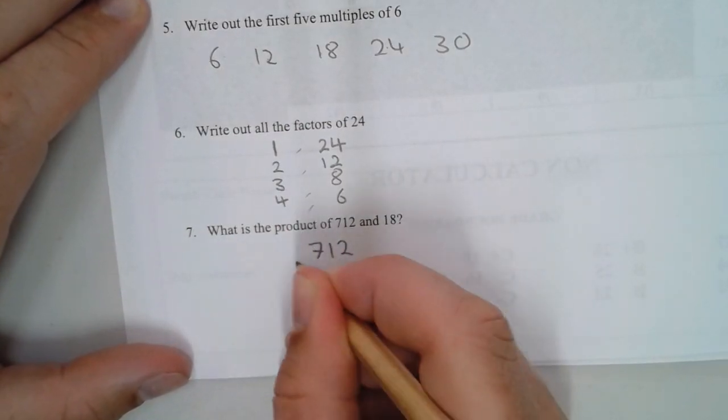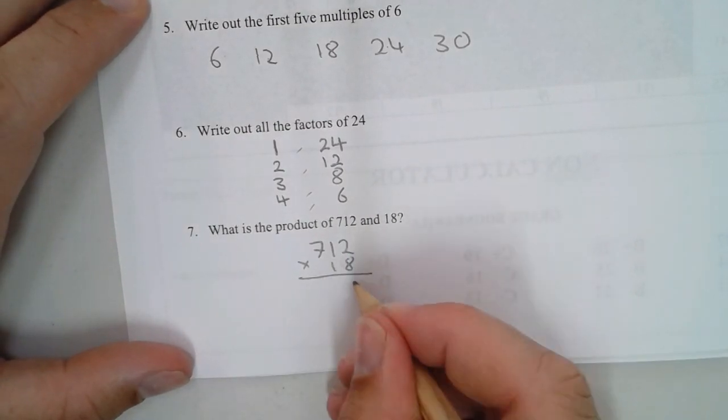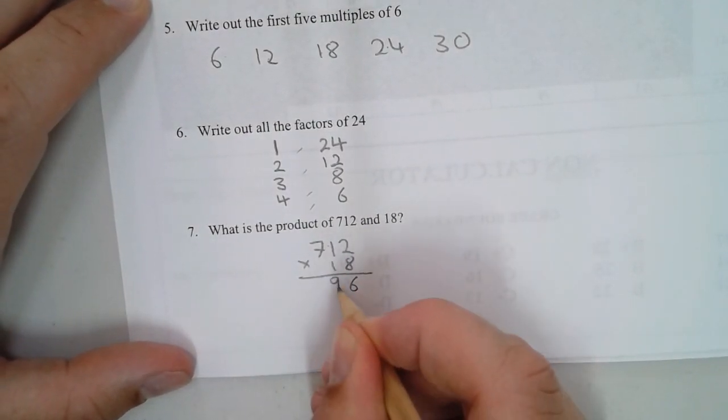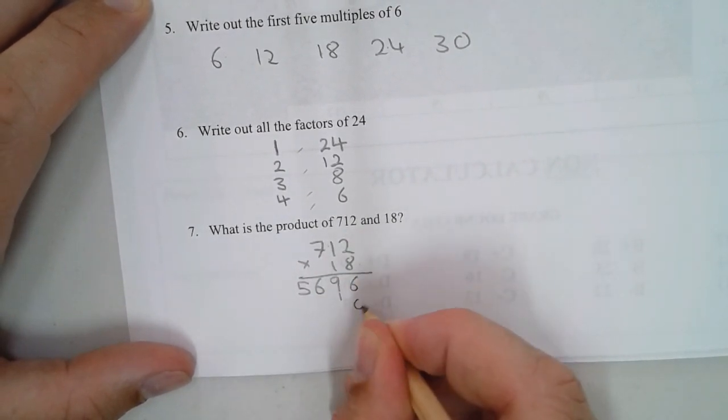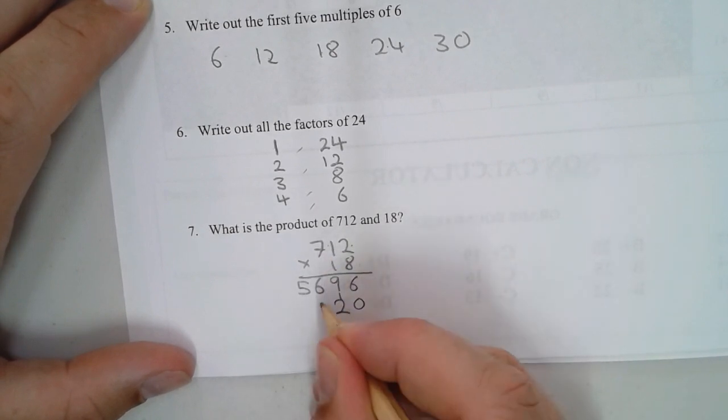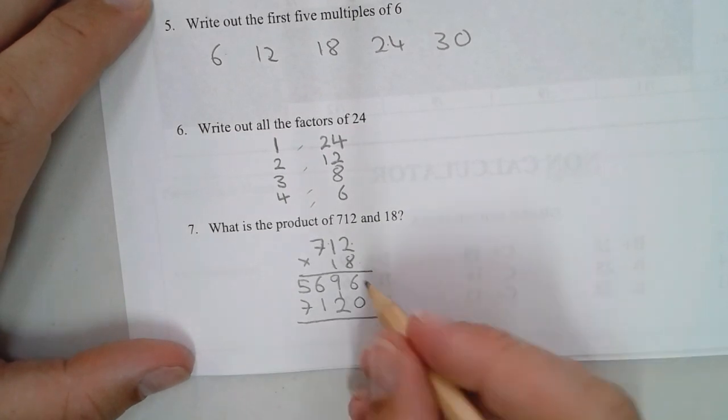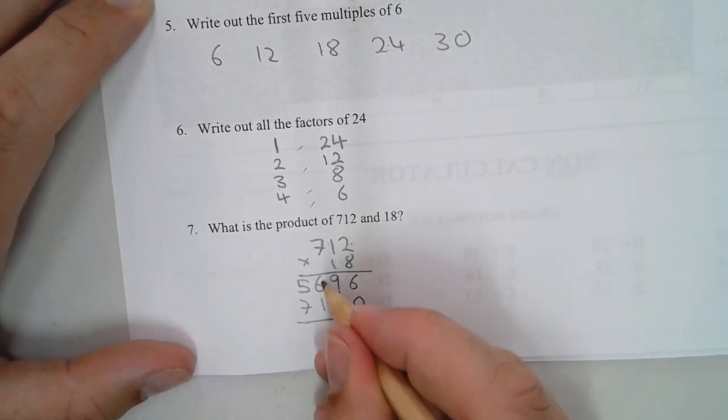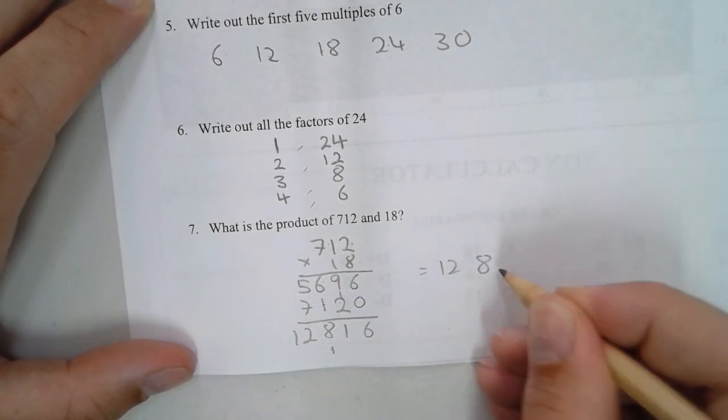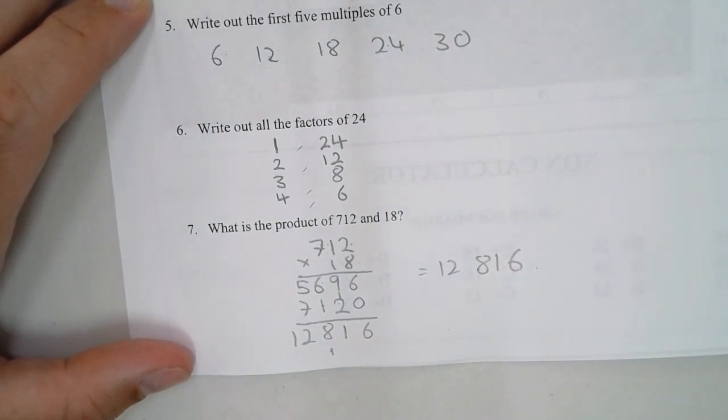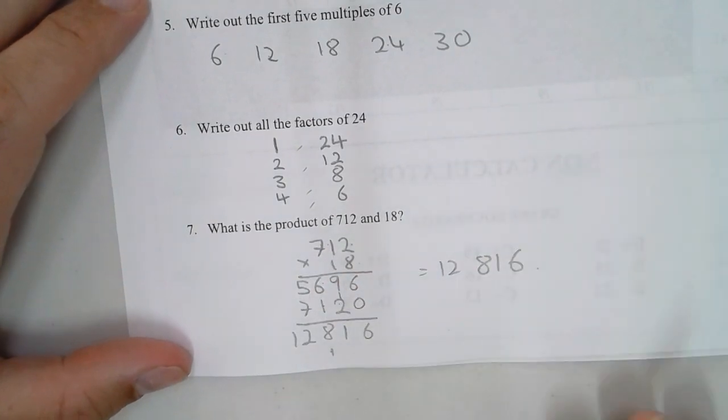What is the product of 712 and 18? Product means multiply, so we have to do long multiplication. 2 times 8 is 16, 1 times 8 is 8 plus the 1 is 9, 7 times 8 is 56. Now we're multiplying by tens, so we add in our 0. 2 times 1 is 2, 1 times 1 is 1, 7 times 1 is 7. We add up going down: 6, 9 plus 2 is 11, 6, 7, 8, and 5 plus 7 is 12. The answer is 12,816.